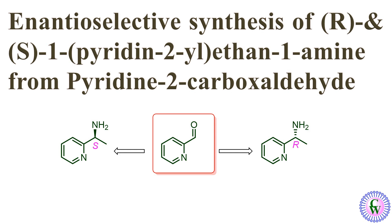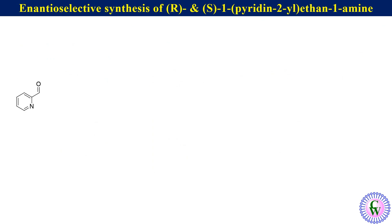For making the R enantiomer of 1-(pyridin-2-yl)ethane-1-amine, pyridine-2-carboxaldehyde is allowed to react with R-t-butylsulfinamide in the presence of titanium tetraethoxide in THF to produce the R-E-sulfinamide as the major diastereomer.